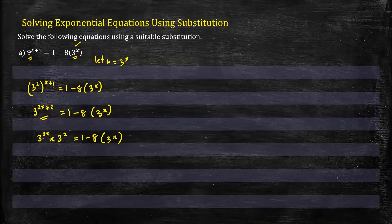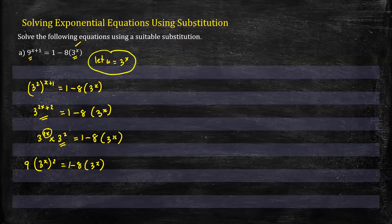On the left side now, I'll break this 2x to be x squared like (3^x)^2. And we have 3 squared here which is 9, so I'll put that in front. This gives us 9(3^x)^2 equals 1 minus 8(3^x). Now we're ready to make our substitution, u equals 3 to the power x.